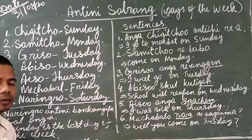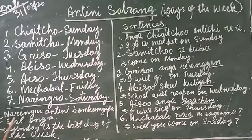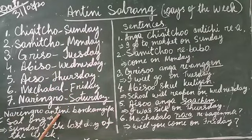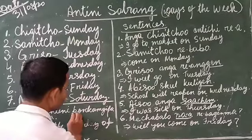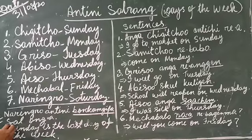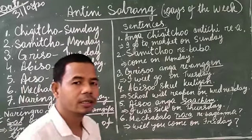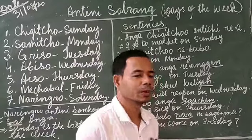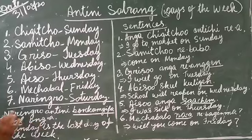The last sentence, number seven: naramuro anki ni onkampa sal — Saturday is the last day of the week. Naramuro means Saturday. Anki ni means of the week. Onkampa means last. Sal in Garo means day — note that in Hindi sal means year, but in Garo sal means day. So Saturday is the last day of the week.